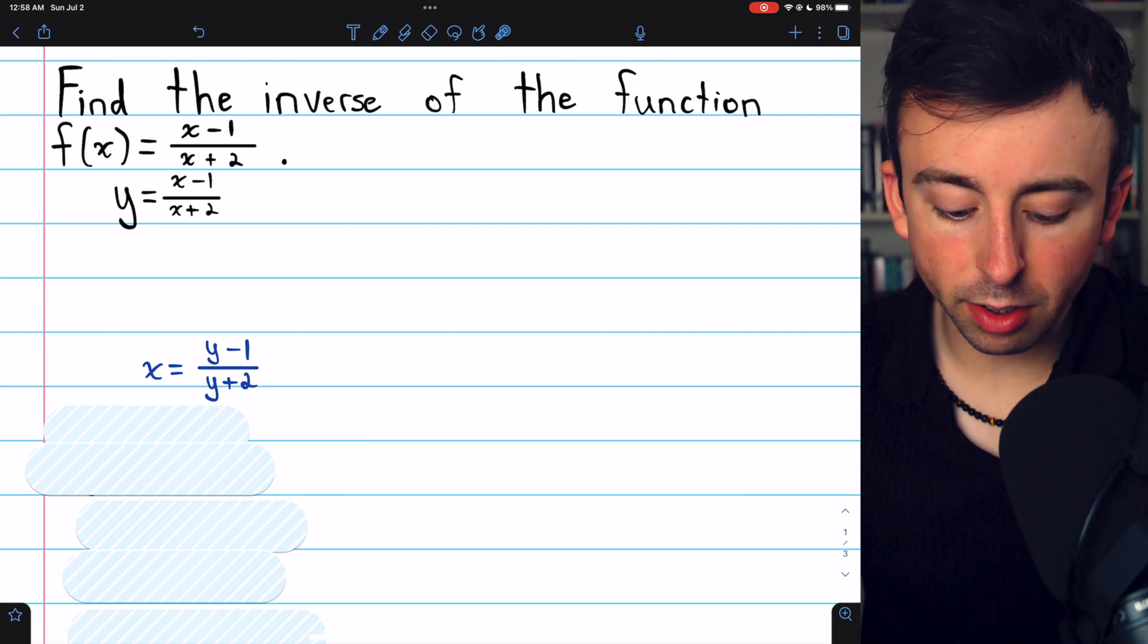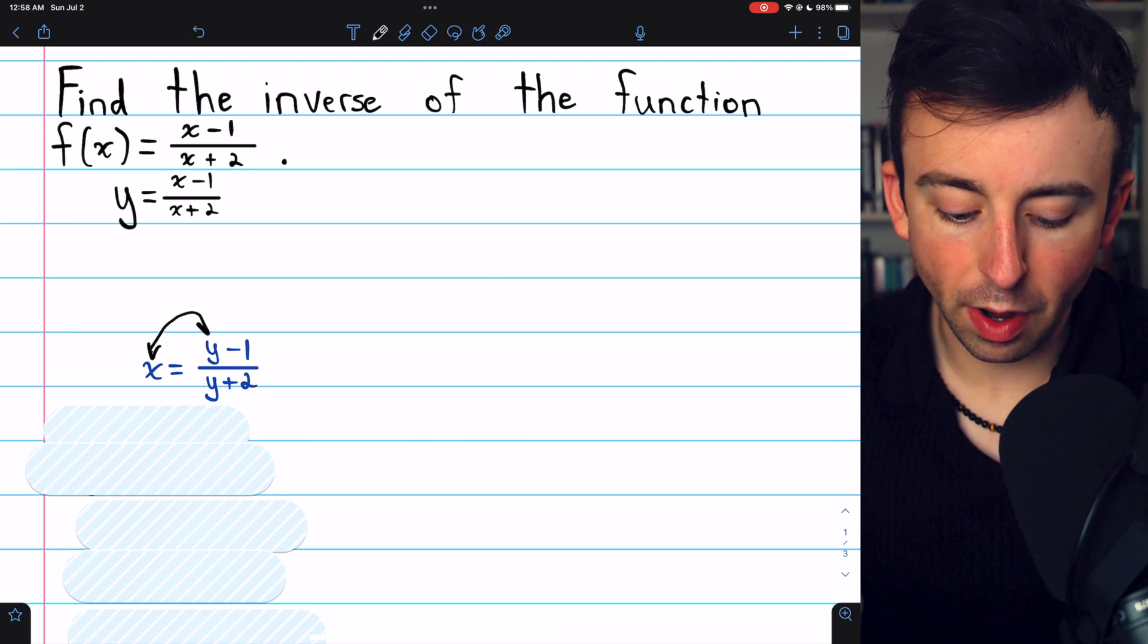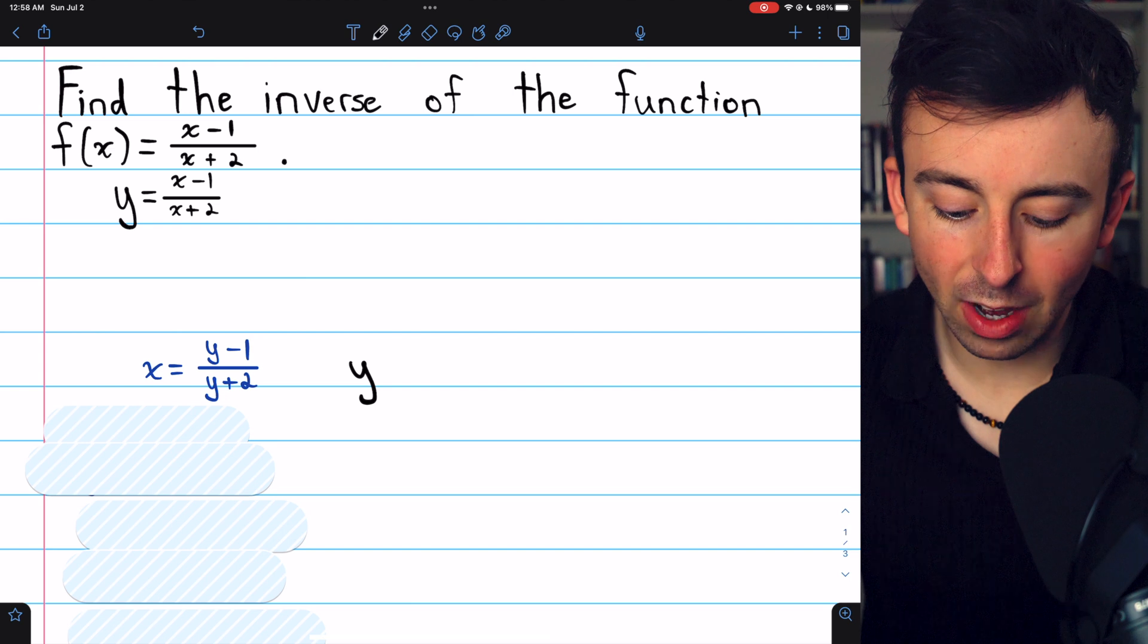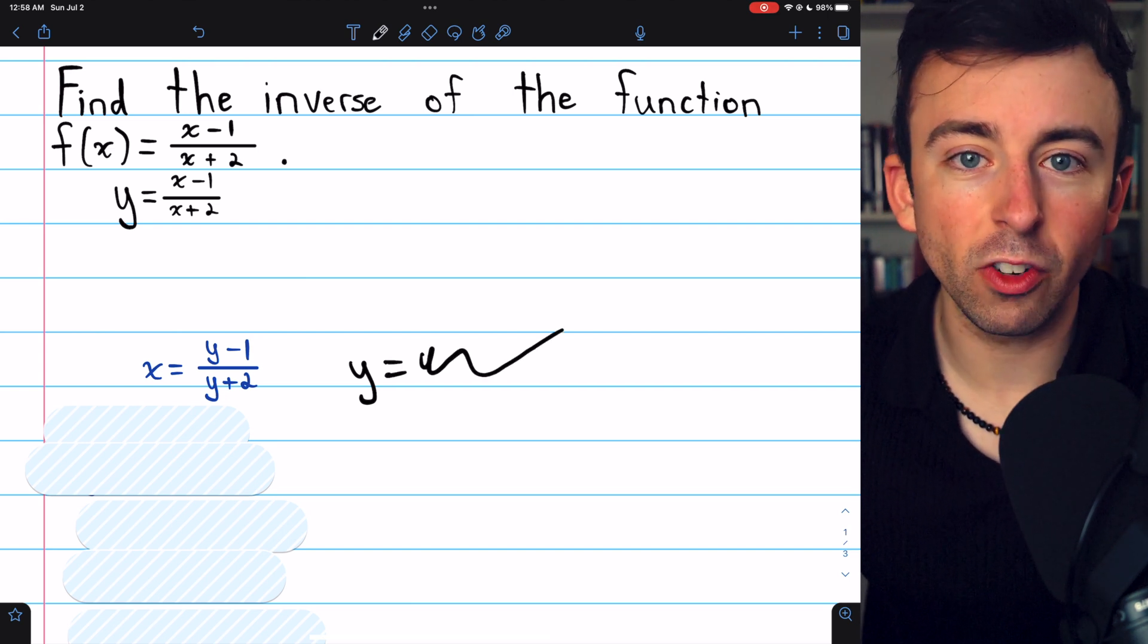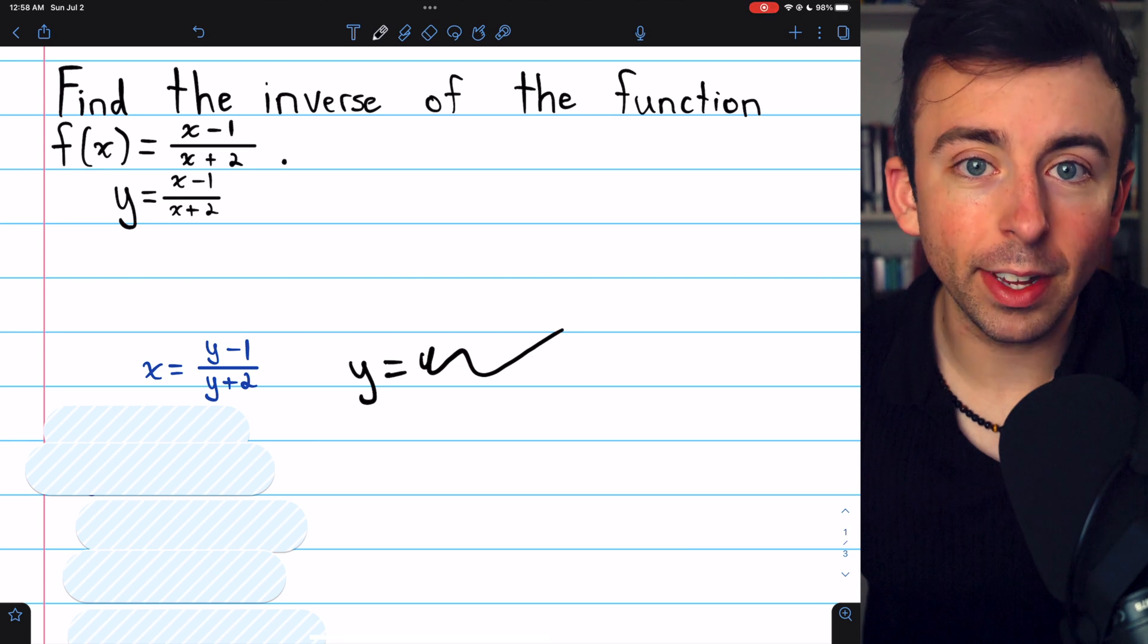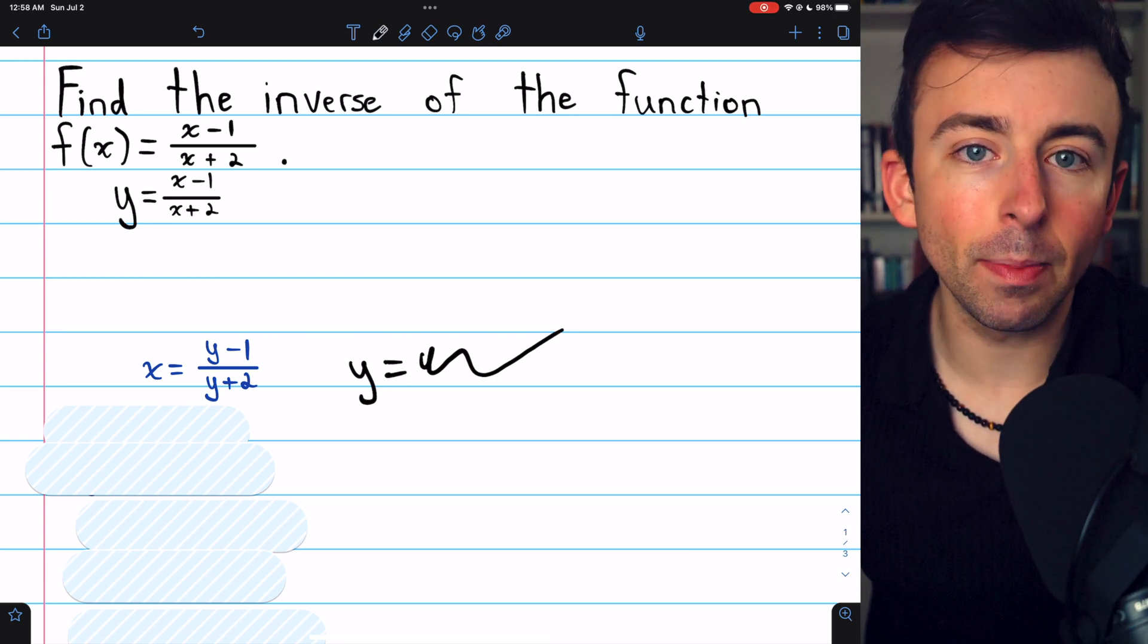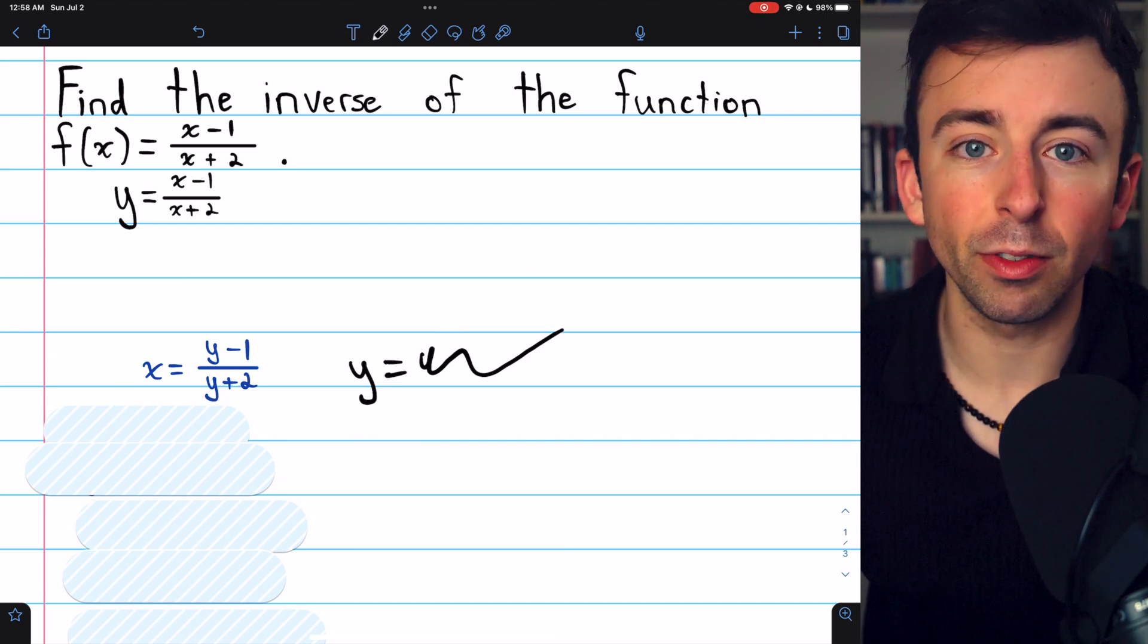Now we just have to solve this equation for y. The primary reason that we do this sort of variable switch is so that when we're done, we're going to have some y equals x type of equation. That way, when we graph it, y will be the dependent variable and x will be the independent variable just like normal. That's the primary reason to make this variable switch.